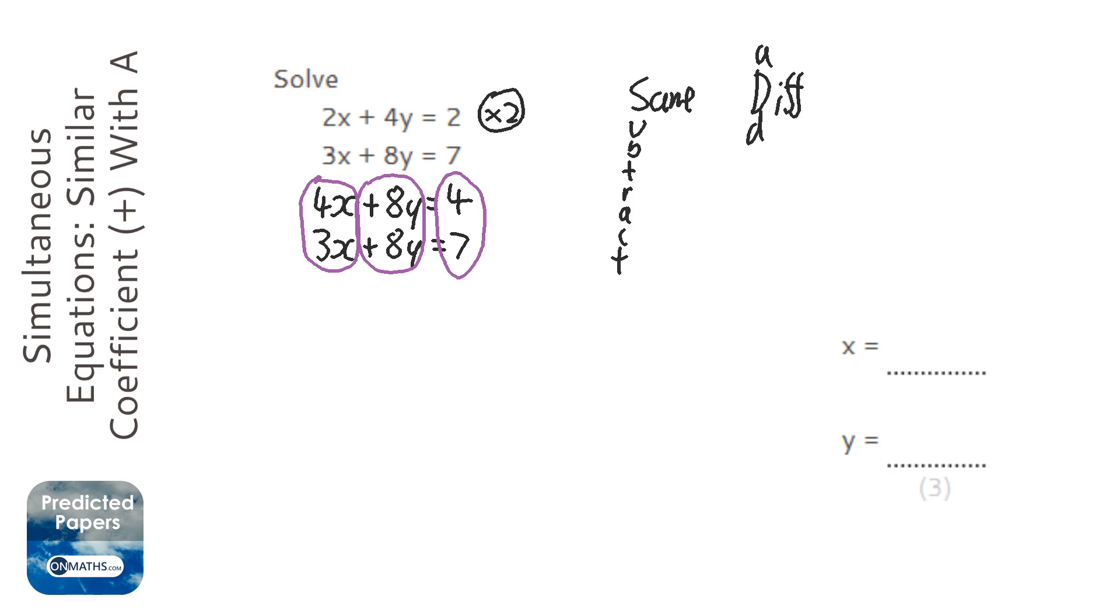Now here we've got 8y and 8y. They're both positives. They're the same. So we know we're going to subtract. So I'm going to subtract going downwards.